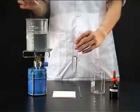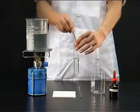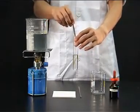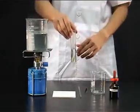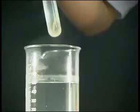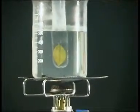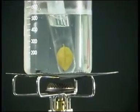The leaf is then placed in a boiling tube of alcohol. The boiling tube is then placed into a beaker of hot water. The alcohol begins to boil and the leaf slowly loses its green color.